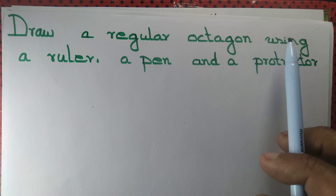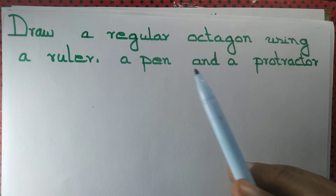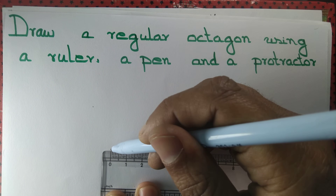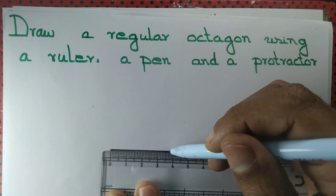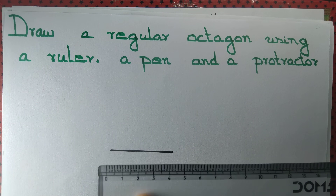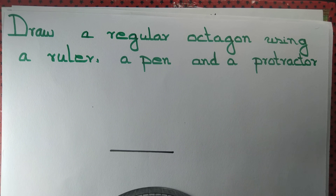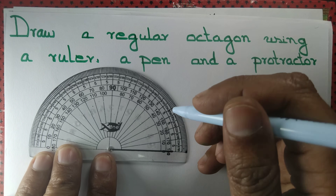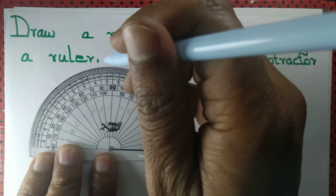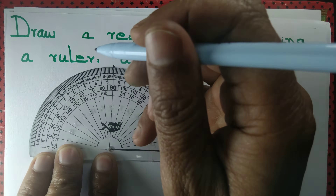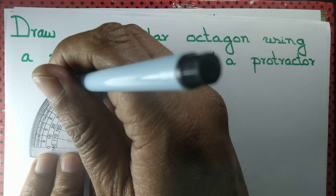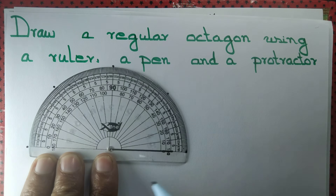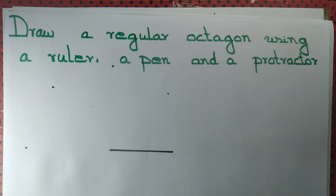Let us draw a regular octagon using a ruler, a pen, and a protractor. We take a ruler and draw a line segment that measures 4 cm, then we take a protractor and mark points at angles 45 degrees, 90 degrees, 135 degrees, and 180 degrees. So we mark several points at different angles.